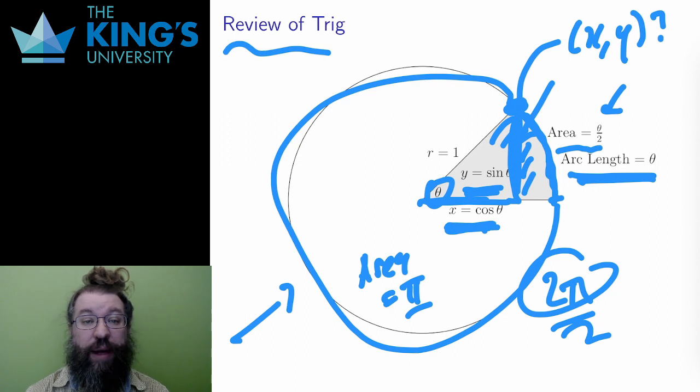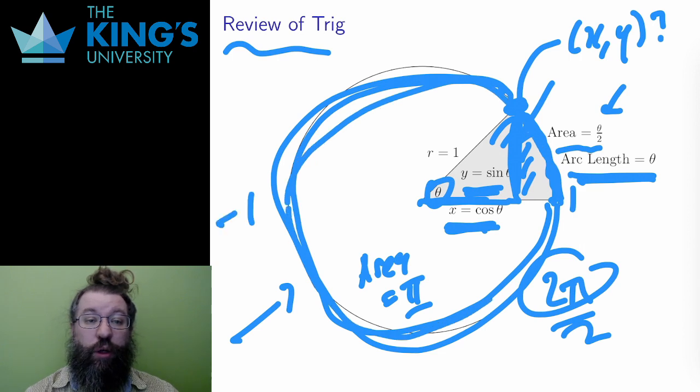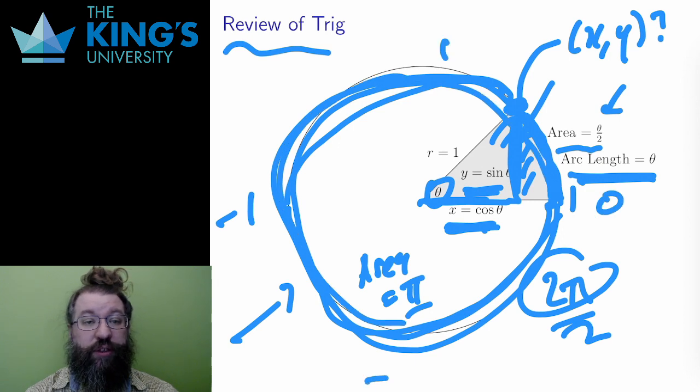As the point goes around the circle, the coordinates oscillate. The x-coordinate starts at 1, decreases to negative 1, and then grows again to 1. This is the cosine wave. The y-coordinate starts at 0, grows to 1, decreases to negative 1, and then back up to 0. And this is the sine wave. Every 2π they repeat, because every 2π I go around the whole circle.